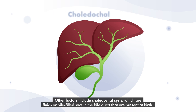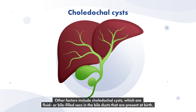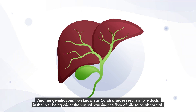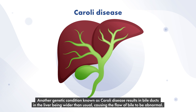Other factors include choledochal cysts, which are fluid or bile-filled sacs in the bile ducts that are present at birth. They can block the flow of bile and cause inflammation, in addition to swollen bile ducts and infection. Another genetic condition known as Caroli disease results in bile ducts in the liver being wider than usual, causing the flow of bile to be abnormal.